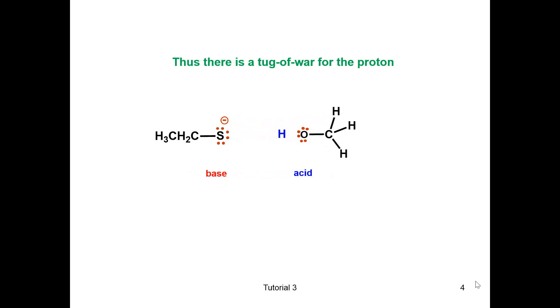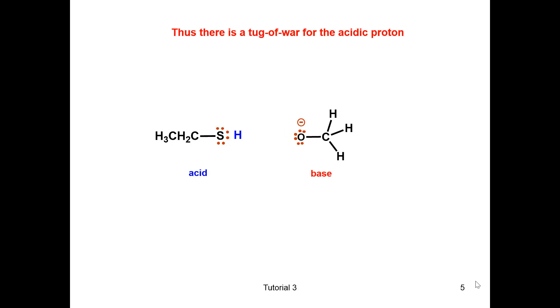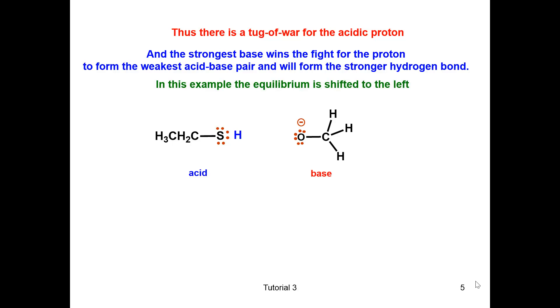The reaction will keep going back and forth. So which side does the equilibrium lie on? Who wins the fight for the proton? The stronger base will form the stronger hydrogen bond and leave the weaker acid-base in solution.